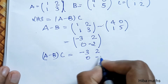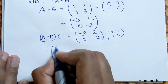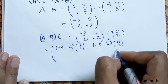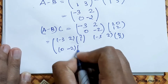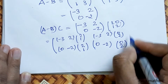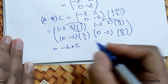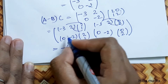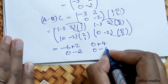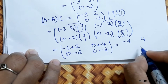For LHS, first compute A - B. A - B: first row: 1-4 = -3, 2-0 = 2; second row: 1-1 = 0, 3-5 = -2. So A - B = [-3,2; 0,-2]. Now multiply (A-B) into C = [-3,2; 0,-2] × [2,0; 1,2]. First row first column: -3×2 + 2×1 = -6 + 2 = -4; first row second column: -3×0 + 2×2 = 0 + 4 = 4; second row first column: 0×2 + (-2)×1 = 0 - 2 = -2; second row second column: 0×0 + (-2)×2 = 0 - 4 = -4. So (A-B)C = [-4,4; -2,-4]. This is the first result.